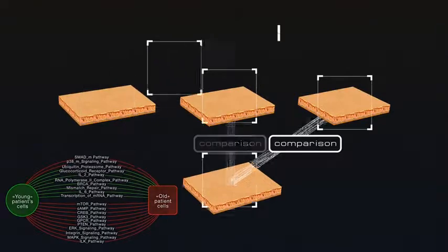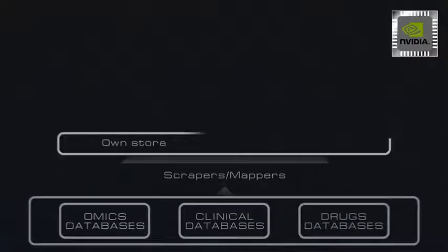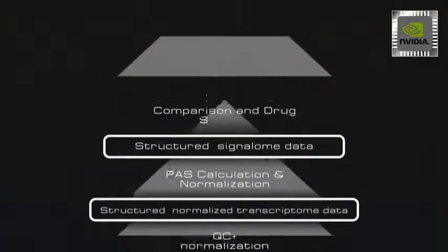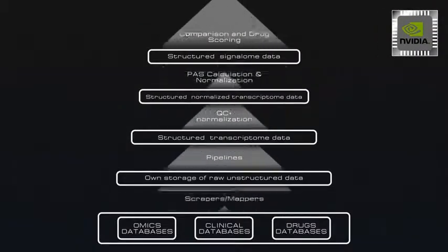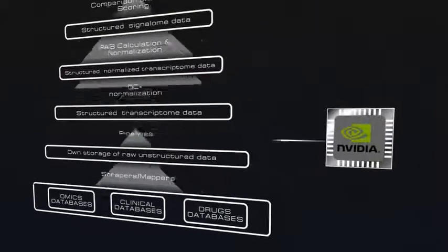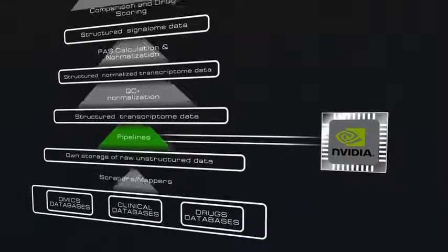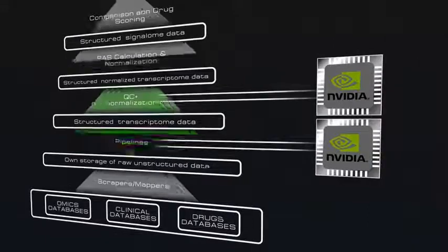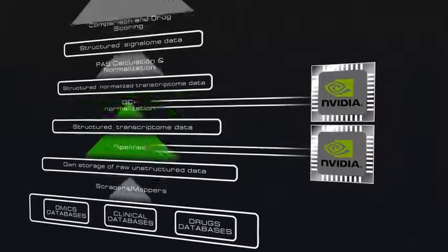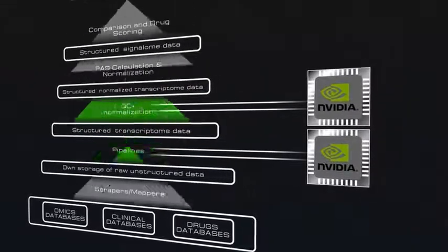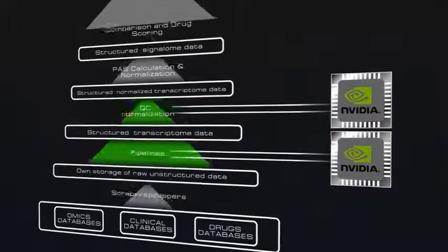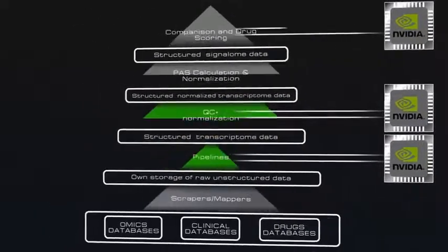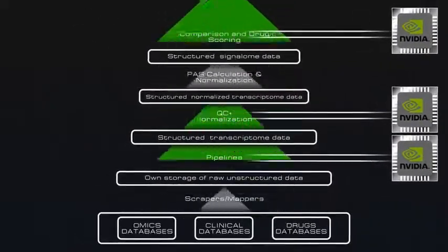We are structuring the data into what we call the data pyramid and NVIDIA GPU can be used to process data at several levels of this pyramid. We use high performance computing to normalize data on the gene level. We also use it to normalize on the pathway level and most importantly, we use it to calculate the signalome changes, identify patterns, similarities, and for drug scoring to evaluate the efficacy of many drugs.